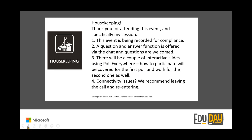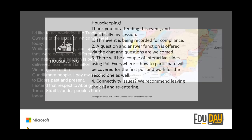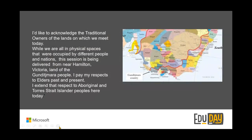I'm going to start by acknowledging the traditional owners of the lands on which we meet today. We're all in different physical spaces, so it's a little bit tricky, but the place I am delivering from is near Hamilton in Victoria, which is the land of the Gunditjmara people. I pay my respects to the elders past and present and extend that respect to Aboriginal and Torres Strait Islander peoples attending today.